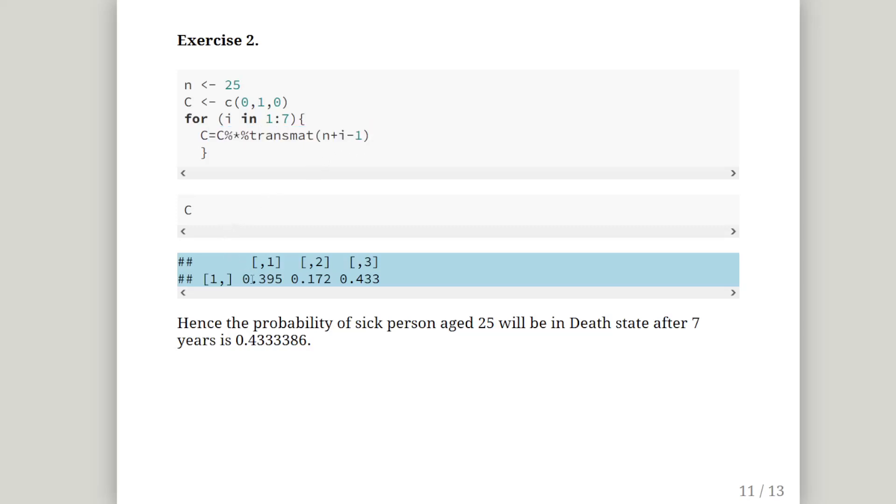So when we run that, we get this state vector here: 0.395, 0.172 and 0.433. So the probability of a sick person aged 25 being dead after seven years - the probability of that is 43%. Very grim this one, but there you go. Alright, leave it there.